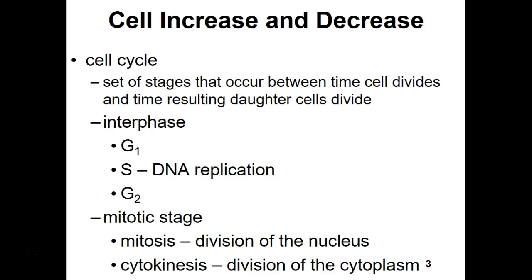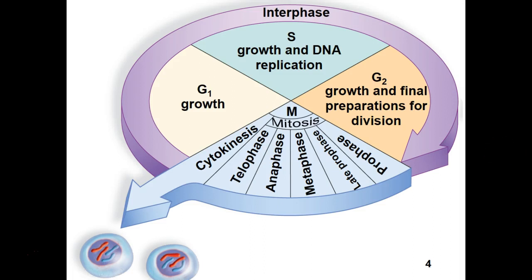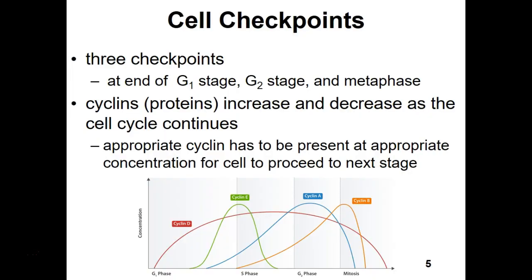In the mitotic stage we also have a third checkpoint. This checkpoint ensures that the spindle fibers, produced by the centrioles, are attached at the proper region — the centromere — on each chromosome, so that chromosomes are separated properly. The three checkpoints occur in G1, in G2, and then in metaphase of mitosis, using cyclins and CDK.